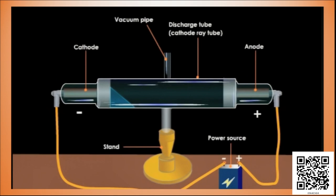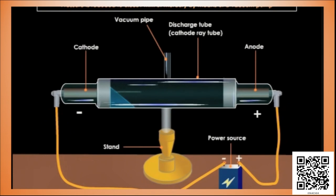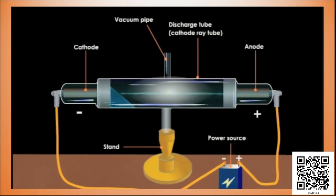To produce cathode rays, a high potential difference of 10 kV to 20 kV is applied between the electrodes, and the pressure is reduced to 0.0001 mm of mercury by means of a vacuum pump. A glow is seen on the walls of the glass tube. The bright fluorescent glow is due to the striking of rays emitted by the cathode. These rays are cathode rays.